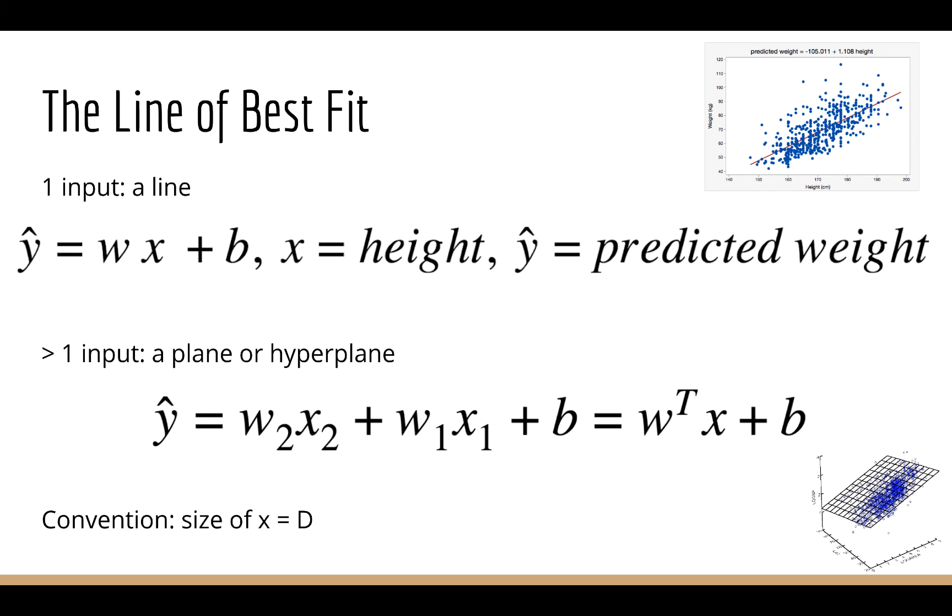In fact we usually have more than one input to try and predict the output from, so you should get very used to using this vector form of these equations. As a convention, we usually use the capital letter D to denote the size of w and x. By the way, they both have to have the same size in order for the dot product to actually work. When we have D greater than 1, we no longer have a line of best fit but a plane or a hyperplane. In other words, it's still a non-curving object but it has more dimensions.